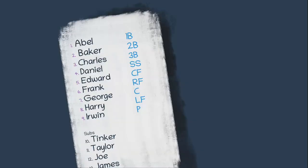Before every game, the manager of your team will meet at home plate with the umpires, and he will give both the umpire and the other team's manager a copy of his lineup for that day's game. This will include their starting lineup of guys who are going to play, and their substitutions who are going to sit on the bench and eat sunflower seeds, but will also be eligible to be subbed into the game at any point. A starting lineup will be either nine or ten players, depending on whether or not there is a DH in the game, and the total number of guys on the team, at least in Major League Baseball, will be 26.